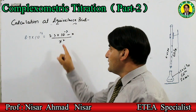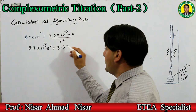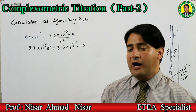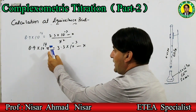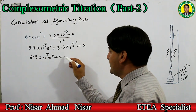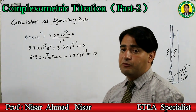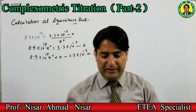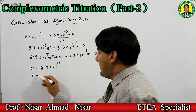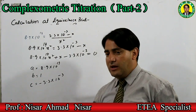Equation کو further simplify کریں: 4.9×10¹⁴ × x² = 3.3×10⁻³ − x۔ Quadratic equation کی form میں convert کریں: 4.9×10¹⁴ x² + x − 3.3×10⁻³ = 0۔ یہاں a = 4.9×10¹⁴، b = 1، c = −3.3×10⁻³ ہے۔